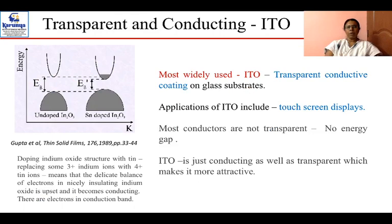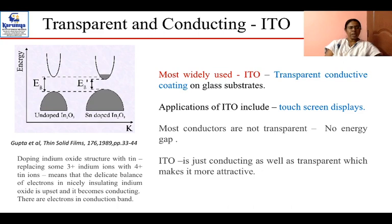A prominent example is ITO — indium tin oxide — a transparent conductive oxide used in solar cells and touch screen displays. As reported by Gupta et al. in Thin Solid Films (1989), the diagram shows that undoped indium oxide has a larger energy gap between conduction and valence bands. When tin is doped in, the band gap is reduced because tin (4+) replaces some indium (3+) ions, creating an electronic imbalance in the insulating indium oxide.